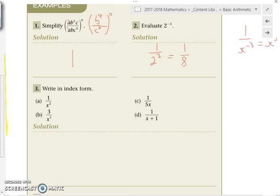We've got plenty of time. Okay, write in index form. 1 over x squared. In other words, we don't want it as a fraction. x to the minus power of 2. Yeah, x to the power of minus 2.